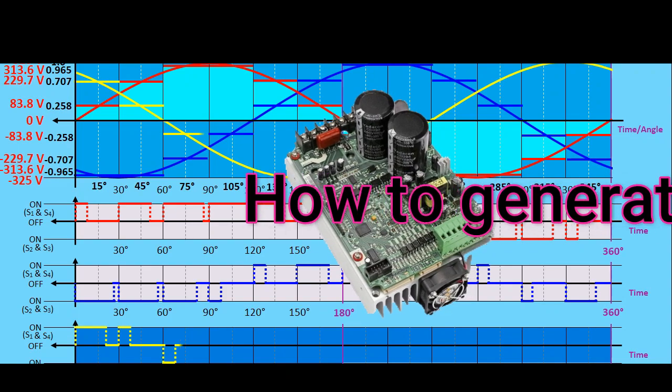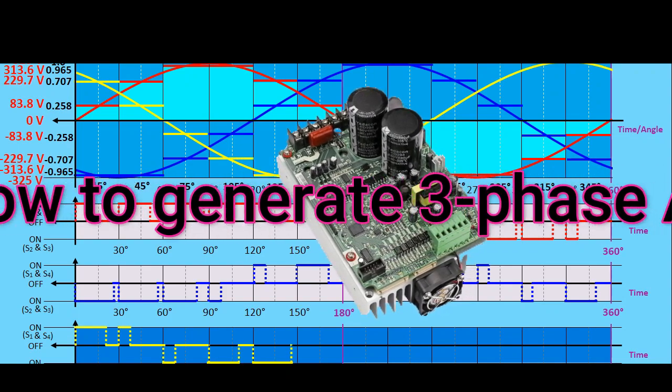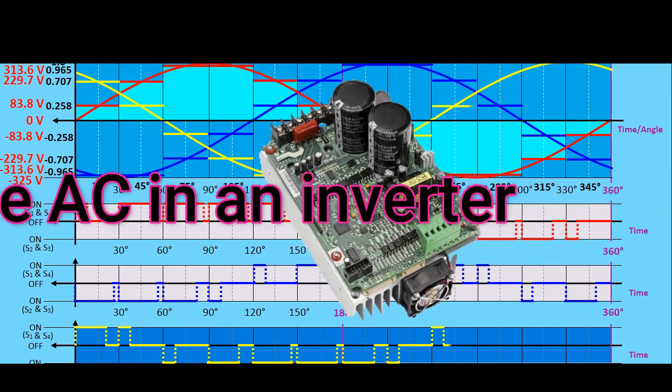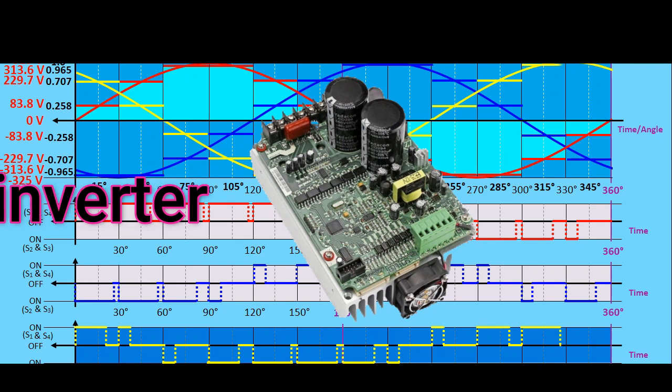Hello, good day to everyone. Today let's see how 3 phase alternating current is generated in an inverter using pulse width modulation.